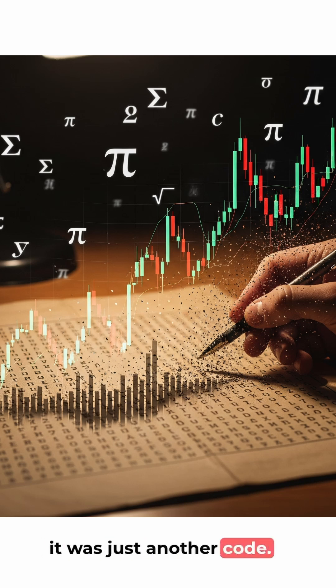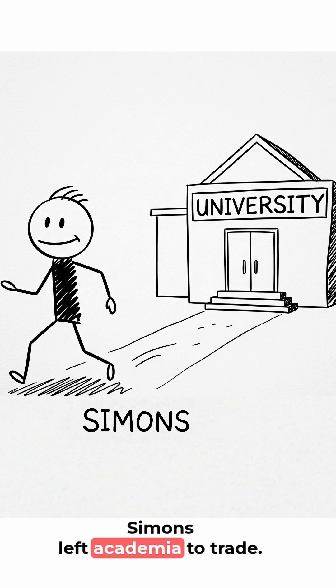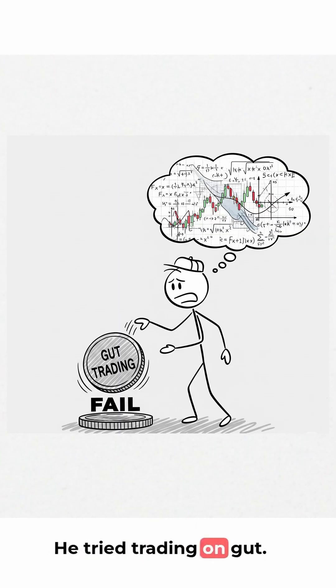To him, it was just another code. In the late 70s, Simmons left academia to trade. He tried trading on gut. It failed.